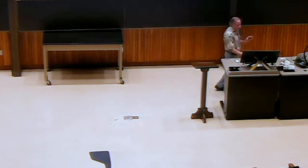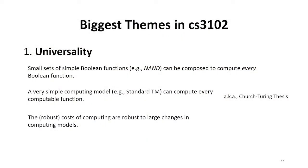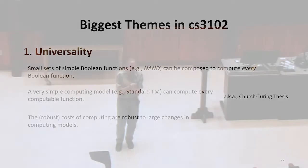And we saw other examples with Turing machines. We've seen that a very simple model of computing, and we've seen a few variations on Turing machines, they can compute every computable function. Of course, what's a computable function? A function that can be computed with our model of computing. So that's a very circular notion.